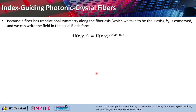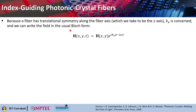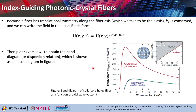Because the fiber has translational symmetry along the fiber axis, which is considered the Z axis, you can take Kz, the Z component of the wave vector, to be conserved. You can then write the field in the usual Bloch form: H(x,y,t) equals H(x,y) propagating along Z and oscillating in time. This gives the magnetic field as a function of space and time. We then plot omega versus Kz — the inset diagram — which tells you about the dispersion relation.